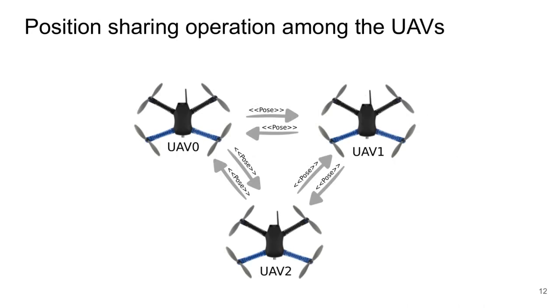This work proposes the development of a localization service that can be used to provide localization data to UAV teams working together in cooperative missions. In this proposal, each UAV needs to know its own position and share it with its neighbors using pose packets. These neighbors can be called nodes of a network in which the UAVs are connected. Global localization is of primary importance for applications involving multiple vehicles, as it can be used to avoid collisions among vehicles, among many other utilities.